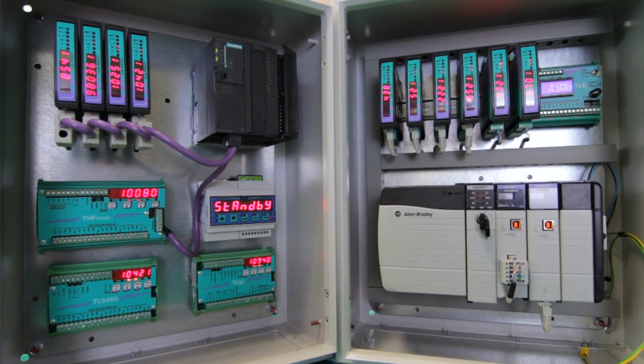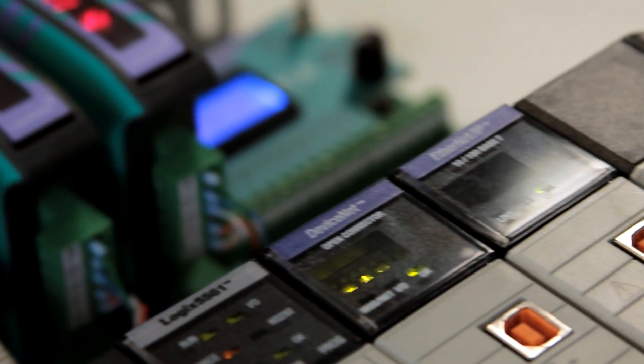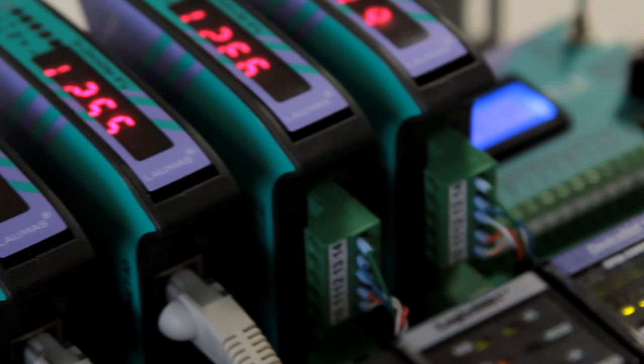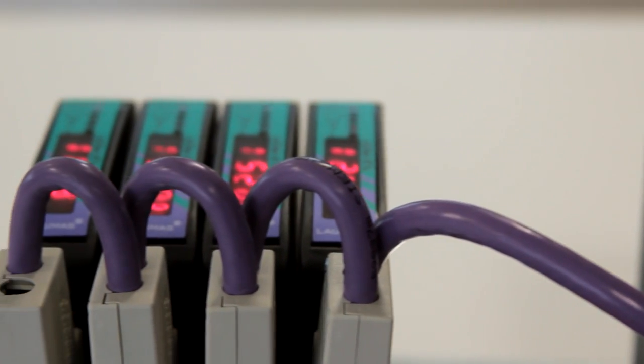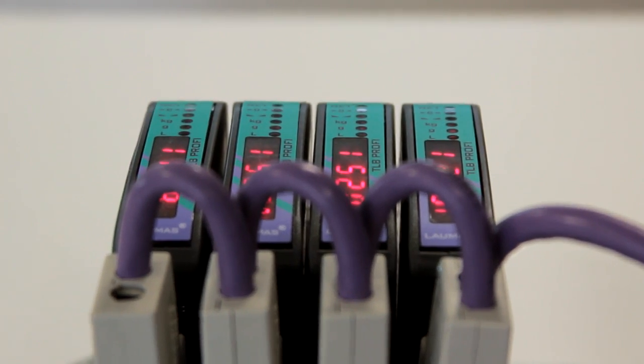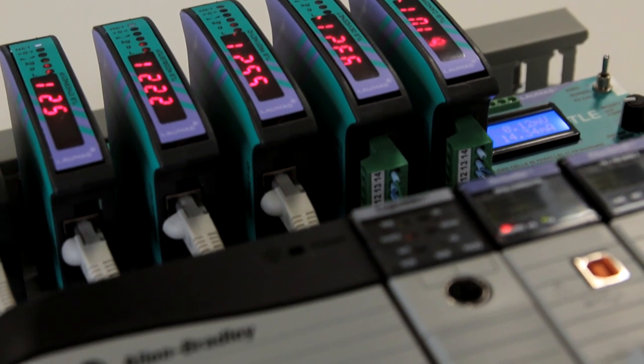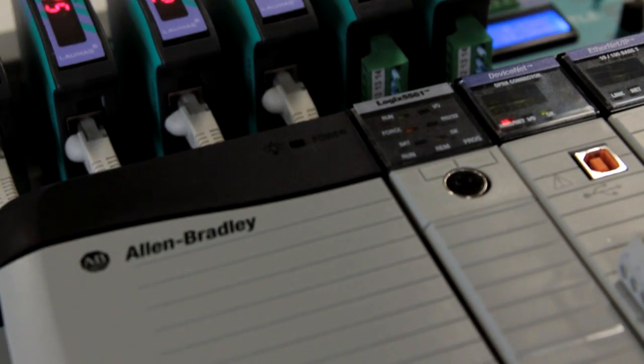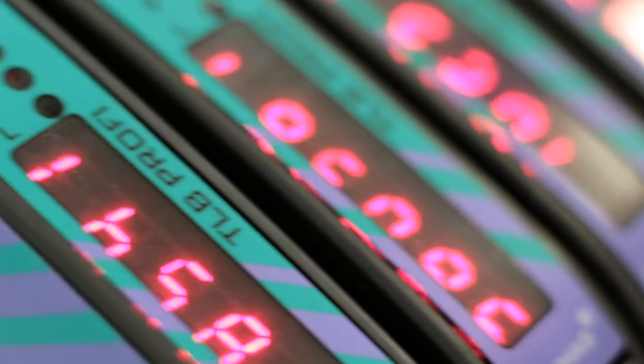Developed and produced entirely in Italy, the Laomas weight transmitters are designed to be integrated in any type of industrial plant. They can be interfaced with the most prestigious international brands of PLC, either via analogue output or the most popular field buses on the market.